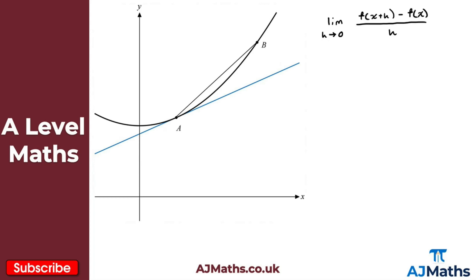This result looks maybe a little complicated or intimidating, but it's actually not too bad. Looking at the diagram, the black curve represents y equals f of x. The blue line is a tangent to the curve at point A. We're concerned with the value of the gradient of the curve at that point, which is complicated because the gradient changes depending on where you are on the curve.